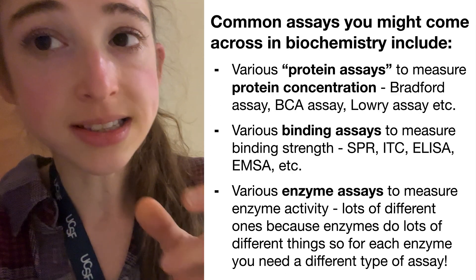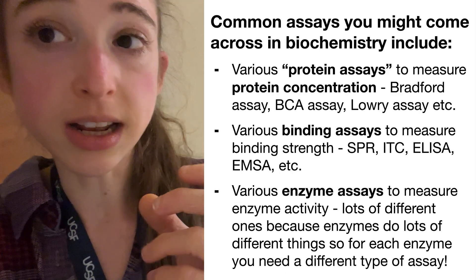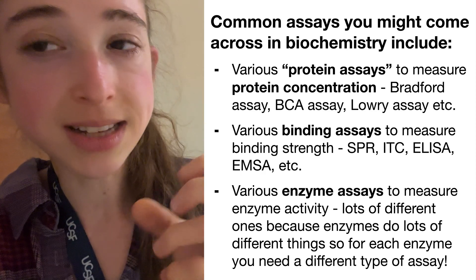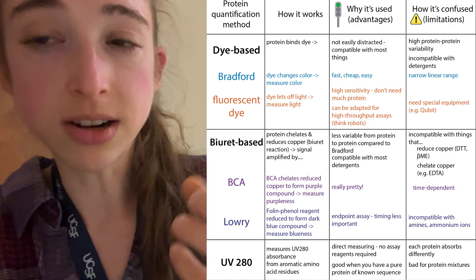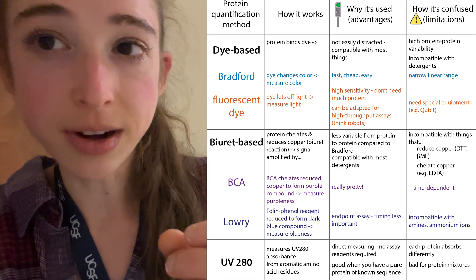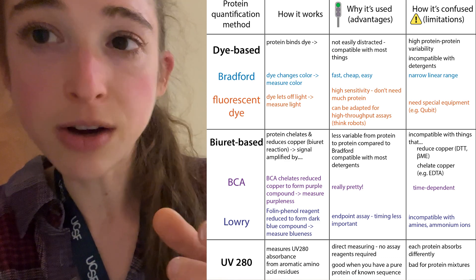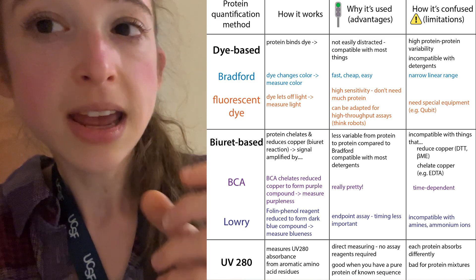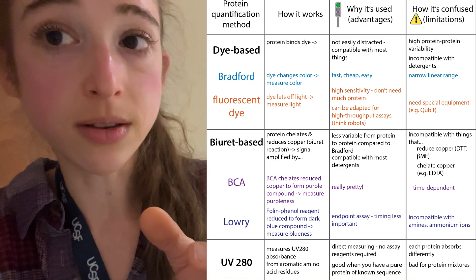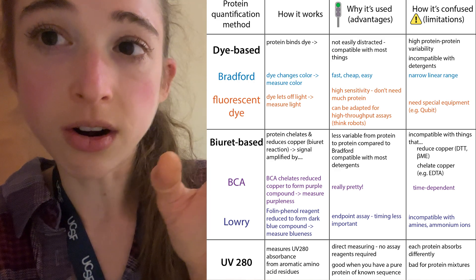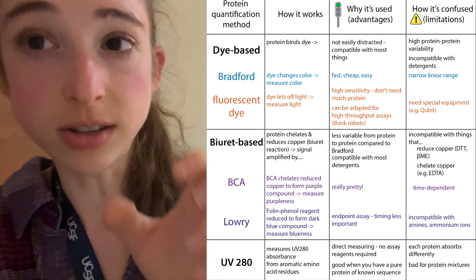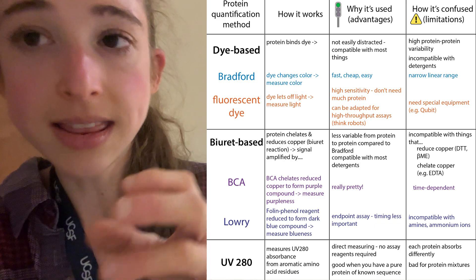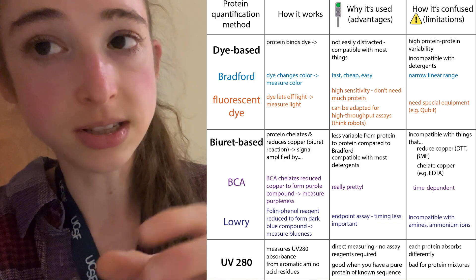Some common assays you'll come across in biochemistry include various concentration assays. We talk about protein assays, which measure protein concentration — things like a Bradford assay, a BCA assay, or a Lowry assay. The assay you choose often depends on the properties of the mixture your molecule is in. There might be incompatibilities with detergents and things like that, which would make you want to choose one method versus another.